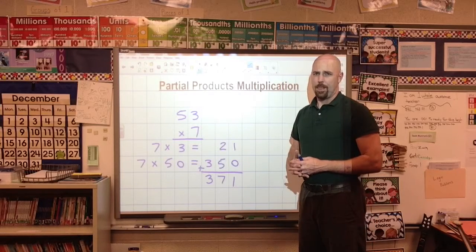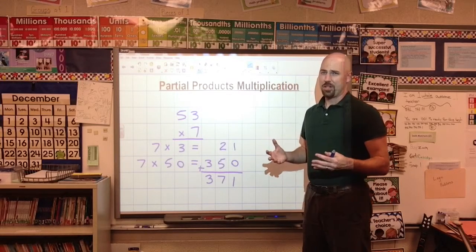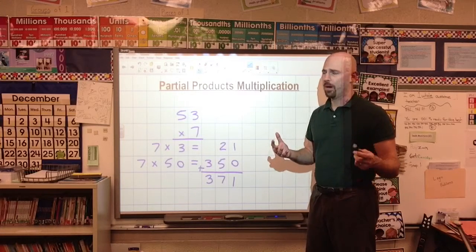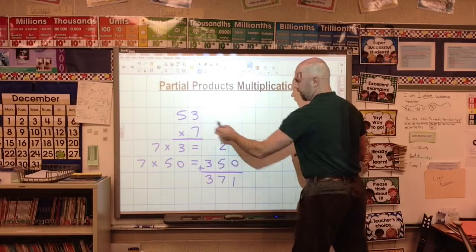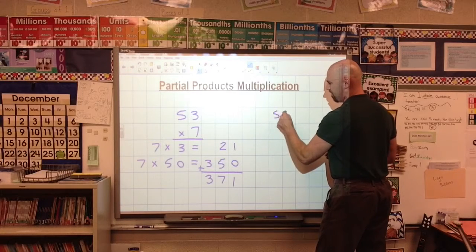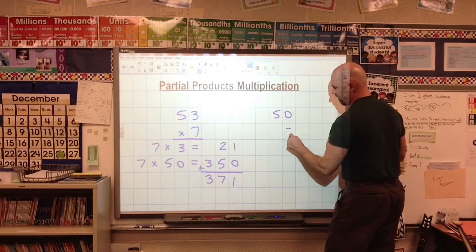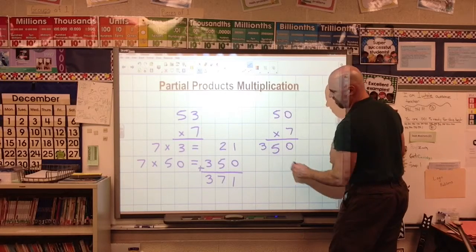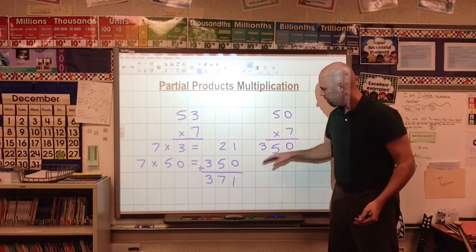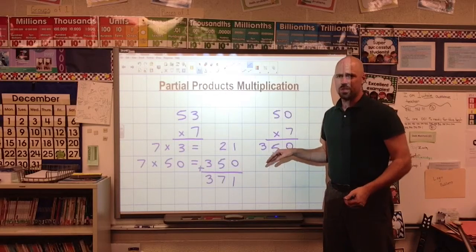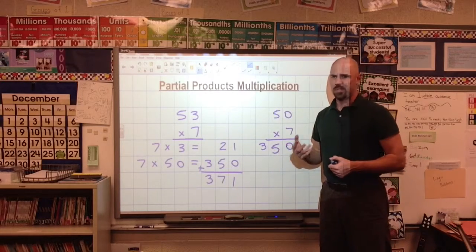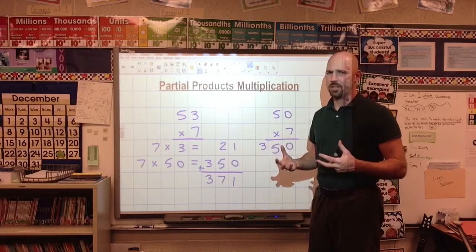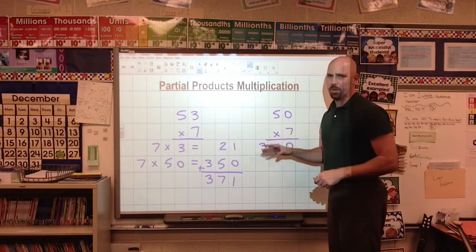7 groups of 50, and because they've been working on their extended facts, they know this one: 350. So we get 371, and that makes sense. If they're not sure if it makes sense, the real easy way that we're going to do this is we're going to check in class. We're going to do ballpark estimates. 53 is closest to being 50, and we'll leave the 7 because we know how to do this fact. My answer should be around 350. Is that pretty close? Yeah, that's pretty close. That answer makes sense.